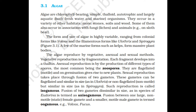The algae reproduce by vegetative, asexual and sexual methods. Vegetative reproduction is by fragmentation; each fragment develops into a thallus. Asexual reproduction is by the production of different types of spores, the most common being the zoospores. They are flagellated and motile, and on germination give rise to new plants. Sexual reproduction takes place through fusion of two gametes. These gametes can be flagellated and similar in size, as in Ulothrix, or non-flagellated, non-motile but similar in size, as in Spirogyra. Such reproduction is called isogamous.